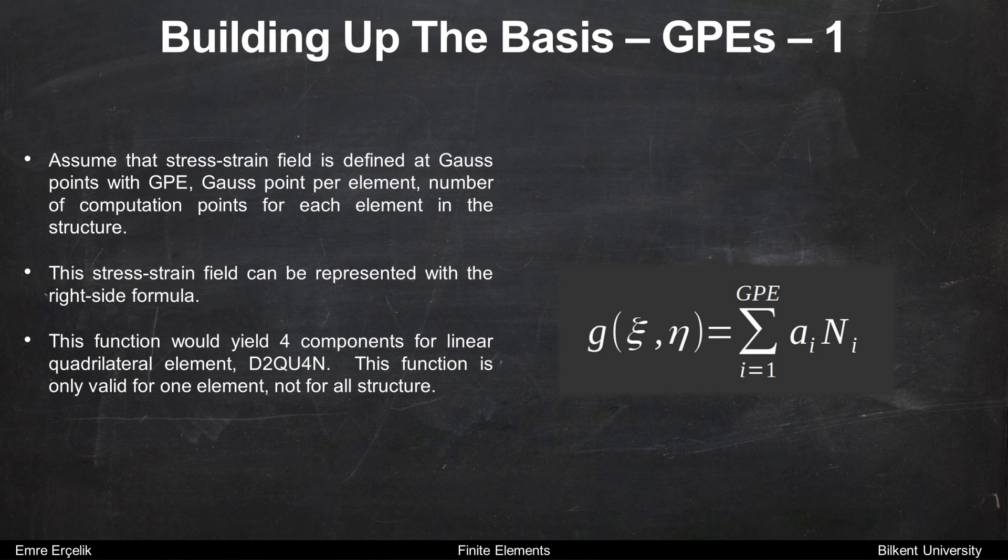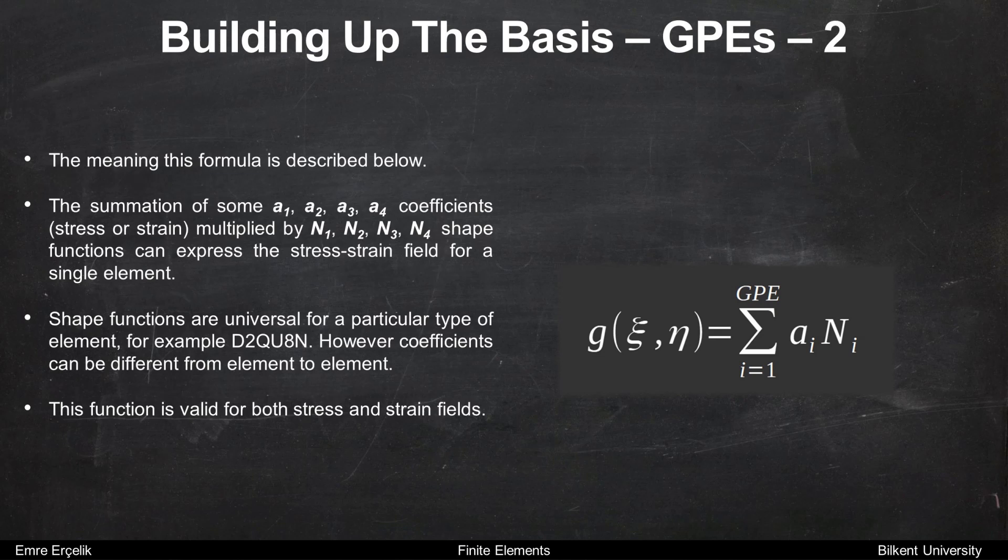And this function is only valid for one element, not for all structure. The meaning of this formula is described below. The summation of some a1 to a4 coefficients multiplied by N1 to N4 shape functions can express the stress-strain field for a single element.